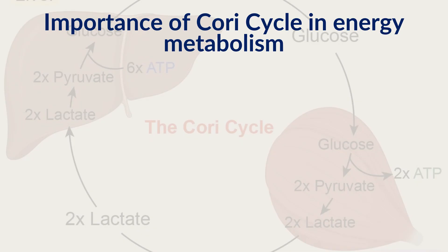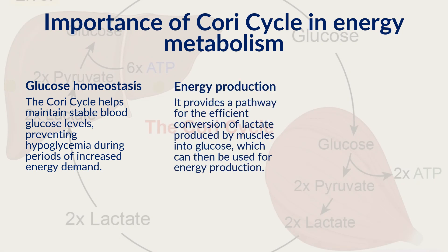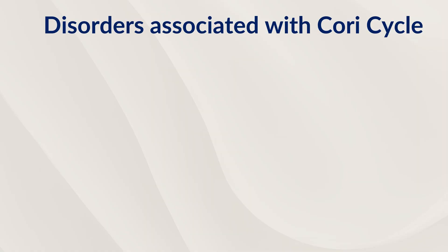What is the importance of the Cori cycle in energy metabolism? First is glucose homeostasis: the Cori cycle plays a crucial role in maintaining glucose balance. During intense exercise or fasting, skeletal muscles produce lactic acid, which is transported to the liver and converted back to glucose, providing an essential energy source. Second is energy production: through the Cori cycle, the body sustains energy production during prolonged physical activity, ensuring glucose is always available to muscles and preventing premature fatigue. Third is muscle function: it enables active muscles to continue functioning for long durations by consuming lactic acid and supplying glucose, providing metabolic flexibility to the muscles.